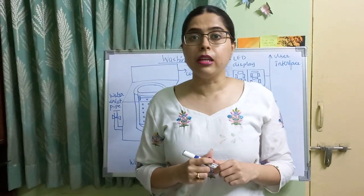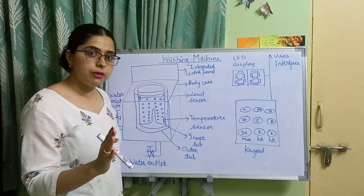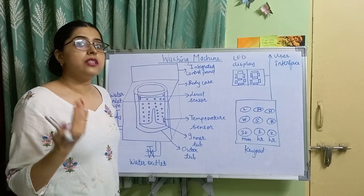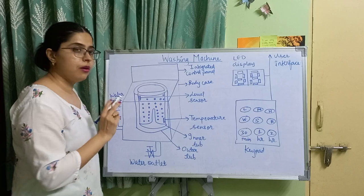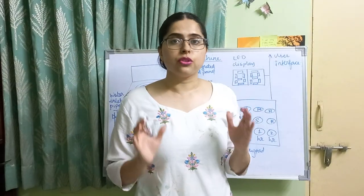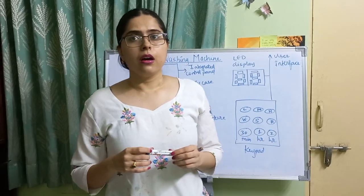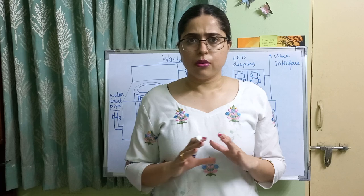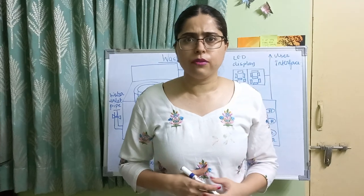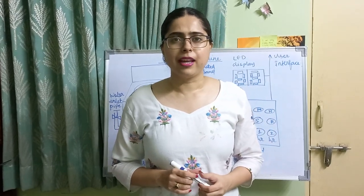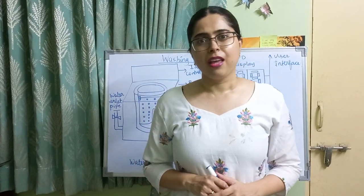The water level sensor and water temperature sensor are invisible to us — we cannot see them. Similarly, the tumble tub, motorized agitator, and water inlet pipe are invisible actuators, hidden from the user. So actuators and sensors are invisible to users. This was about the working of the washing machine. Please like, share, and subscribe to my channel and press the bell icon for notifications. Thank you and bye-bye.